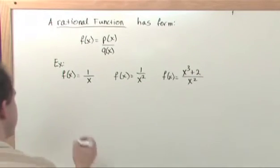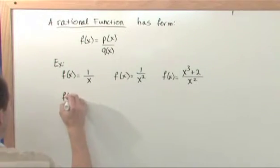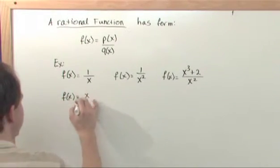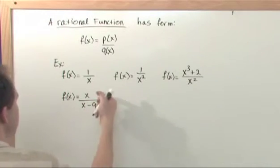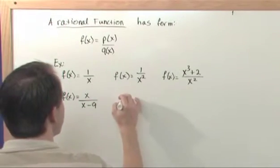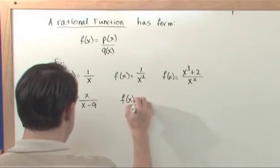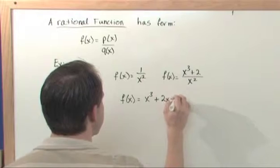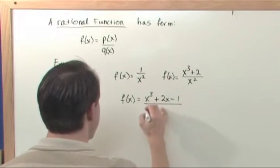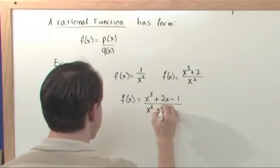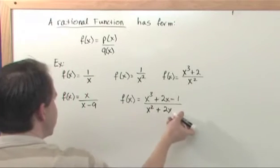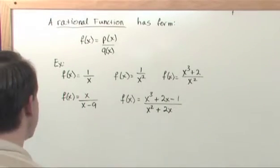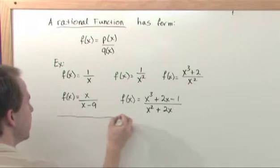So, they look complicated, but they're really, they're just a function. f(x) is equal to x over x minus 9, polynomial on the top, polynomial on the bottom, and just one more grand finale, f(x) is equal to x cubed plus 2x minus 1 over x squared plus 2x. There's a polynomial on the top, polynomial on the bottom. That's all that's going on here. That is what is called a rational function.